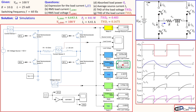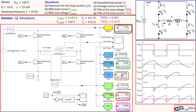Verifying the results one by one: the RMS load current from simulation is 6.6343 amps — matching our calculation. The RMS load voltage is 100 volts — also matching. The source current is 4.413 amps — close to our calculated 4.41 amps. The THD of the load voltage is 0.4834 — close to our 0.483. The THD of the load current is 0.1677 — close to our 0.1675. All values are verified.